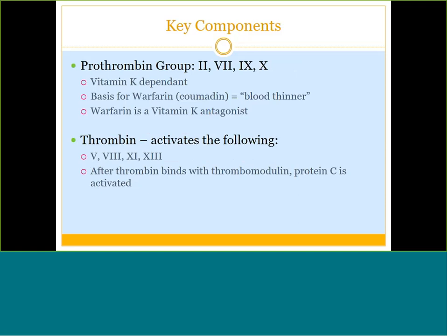The prothrombin group is made up of factors 2, 7, 9, and 10 — a memory trick: 2 plus 7 is 9, and 10 is along for the ride. These four are all vitamin K-dependent factors, which is the whole premise of how Coumadin or warfarin works. Warfarin is a vitamin K antagonist, so by making vitamin K unavailable, factors 2, 7, 9, and 10 can't form and function normally, preventing clot formation. Anybody prone to clotting may be put on warfarin. If it's an essay question, you need a couple of sentences on how it functions.